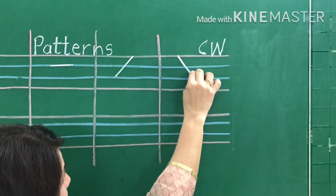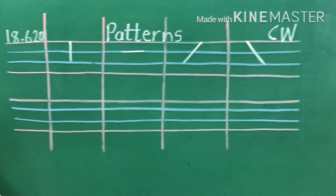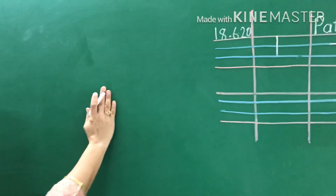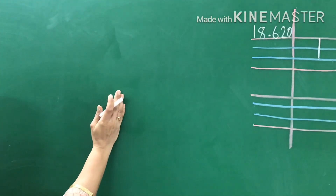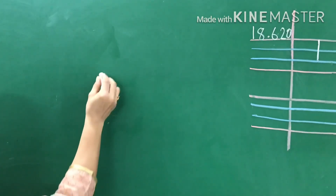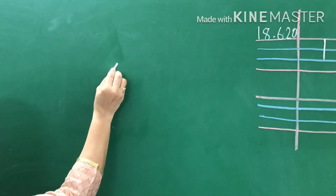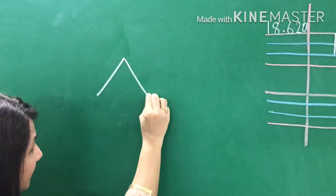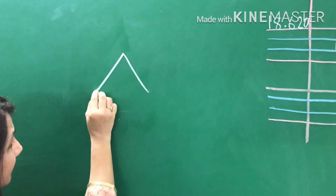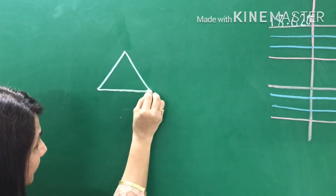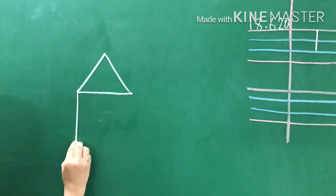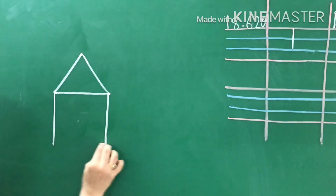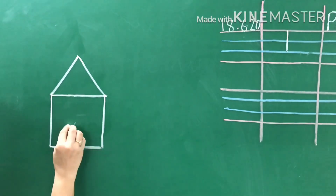Now on the left page, we will draw a house using patterns: slanting line, slanting line, sleeping line, standing line, standing line, sleeping line.